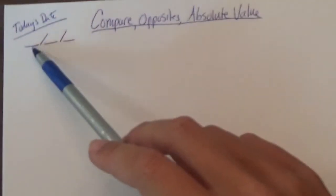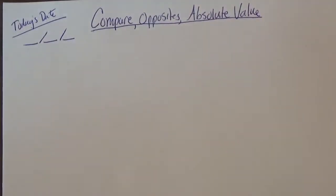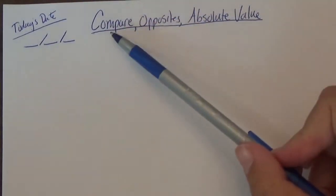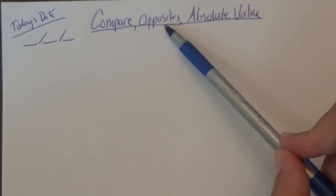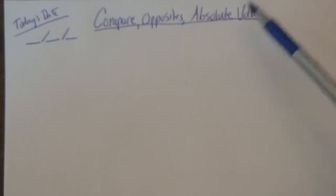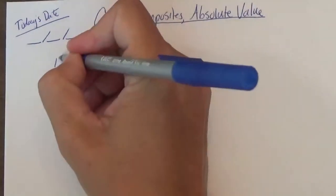So to start with today's date, I'm going to let you fill it in. Hopefully it was already up for you to see. And the title for today's notes, we have to cover three things: comparing, opposites, and absolute value. So that's your title there. We're going to do things one at a time.